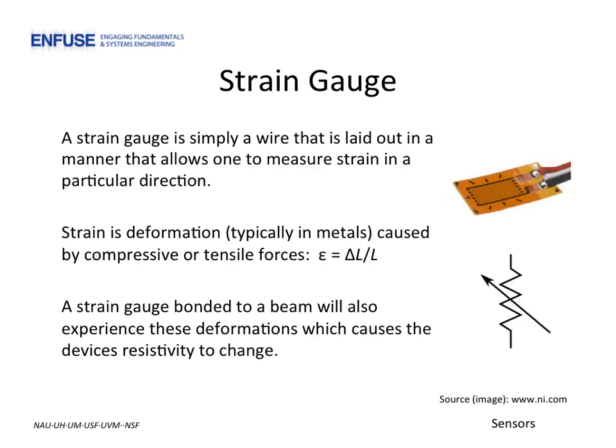Here we see an image of a strain gauge. Unlike the thermistor or photoresistor, the strain gauge is not made of any special material. It can simply be thought of as a wire laid out in a pattern designed to detect deformation in a particular axis.